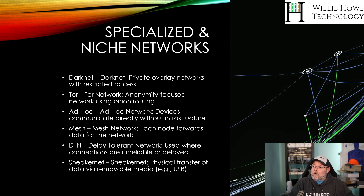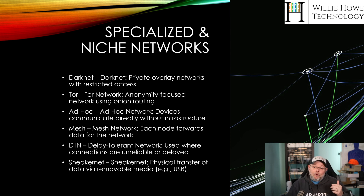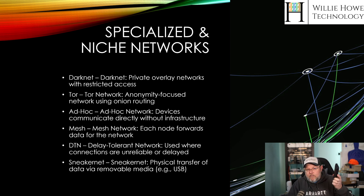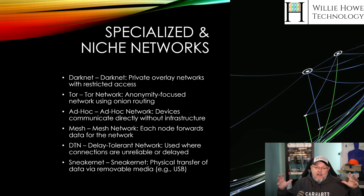Then we have specialized and niche networks. We've got a darknet, which is a private overlay network with restricted access. You have the Tor network, an anonymity-focused network using the Onion routing protocol. You've got ad hoc networking — if you take two computers, plug an Ethernet cable between them without a DHCP server, they're going to get an APIPA address, those IP addresses starting with 169, and you can communicate that way. You can also have phones with near-field communication and communicate directly between devices, or even directly with printers over NFC.